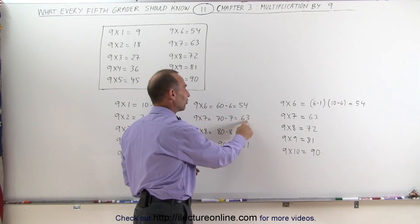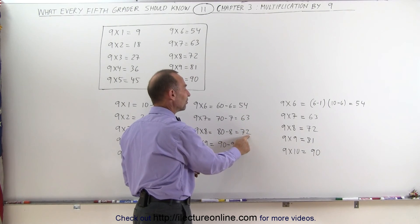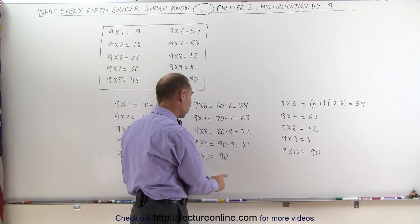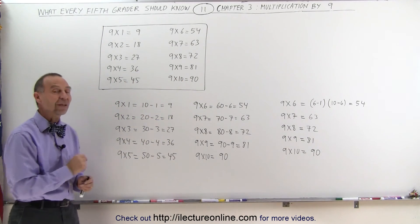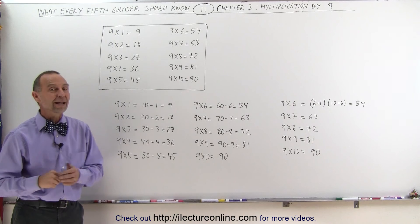5 plus 4 is 9, 6 plus 3 is 9, 7 plus 2 is 9, and 8 plus 1 is 9. Of course, 9 plus 0 is 9 as well. That's another way to check and see if your answers are right when you multiply by 9.